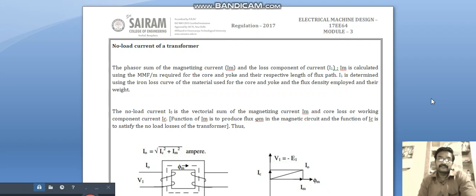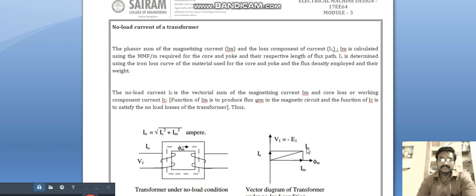The no-load current I naught is the vector sum of magnetizing current Im and core loss or working component current Ic. I naught is the vector sum of Ic and Im. The function of Im is to produce flux in the magnetic circuit.